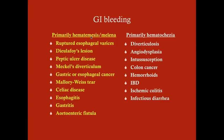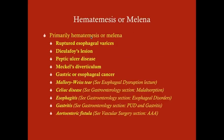So the upper GI includes the esophagus, stomach, and duodenum. We're going to talk about five things: ruptured esophageal varices, which is your biggest emergency out of all of these; the Dieulafoy lesion; peptic ulcer disease; Meckel's diverticulum; and gastroesophageal cancer — all of which cause hematemesis or melena.